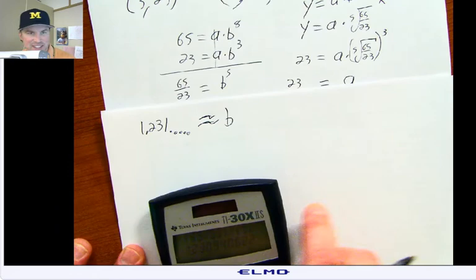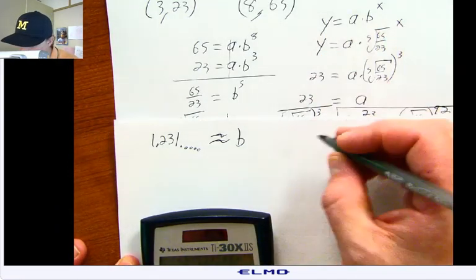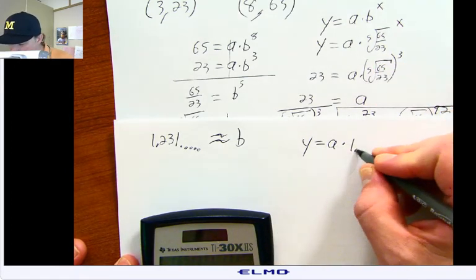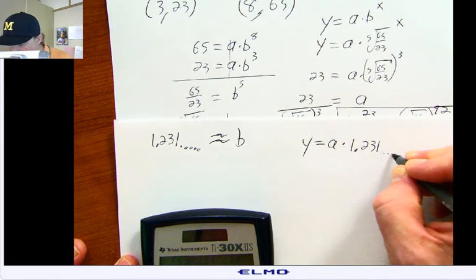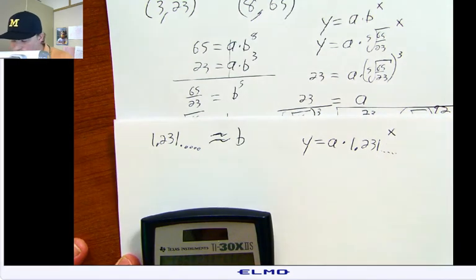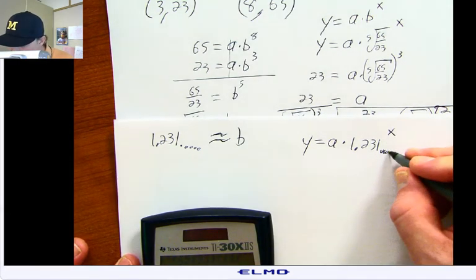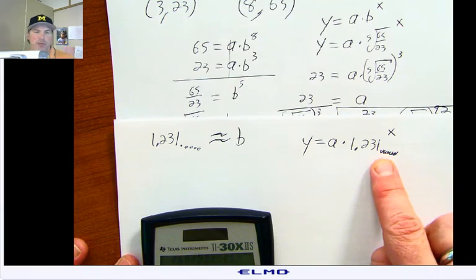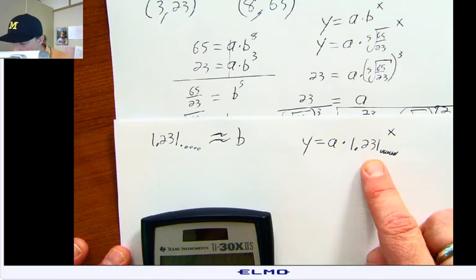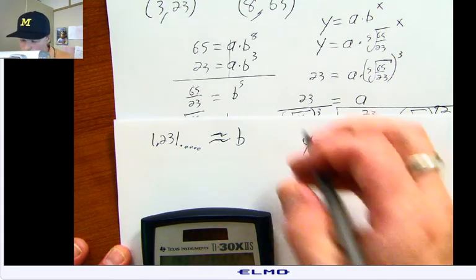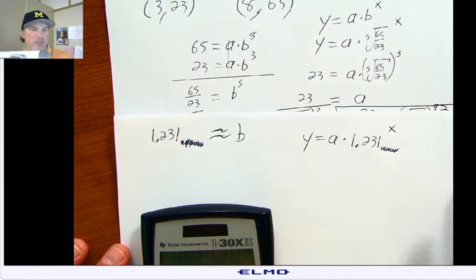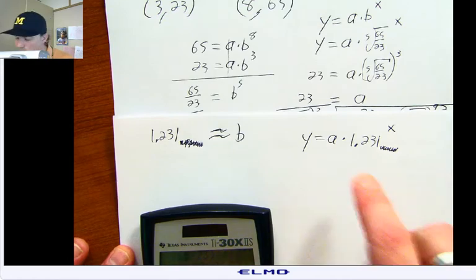Then as I get to this next stage, when I rewrite it out here, I write y equals a times, and instead of keeping this exact answer, I have 1.231 dot dot dot, raised to the x. I'm okay with you using a decimal approximation to three decimal spots here. I'm okay with that. I'm going to live with that. But you need to show it in your work. If you don't show it in your work, this is not going to work out. It needs to be three decimal spots, and it needs to be rounded correctly.